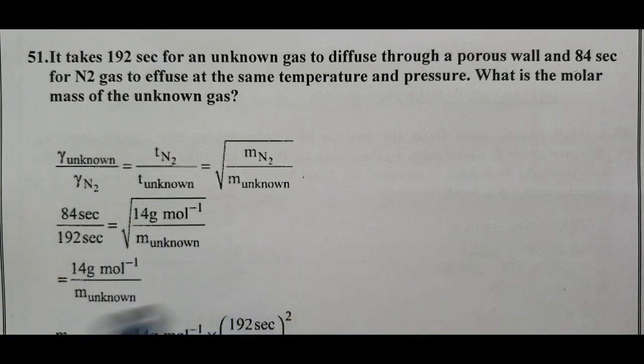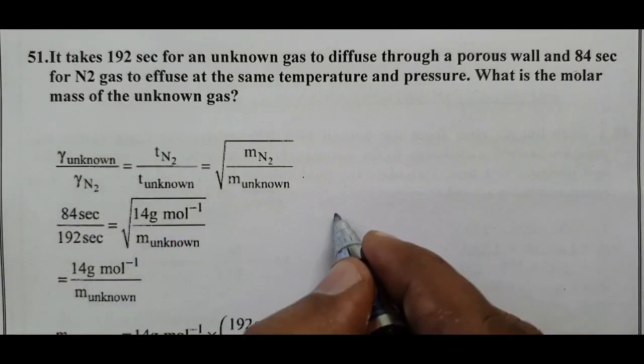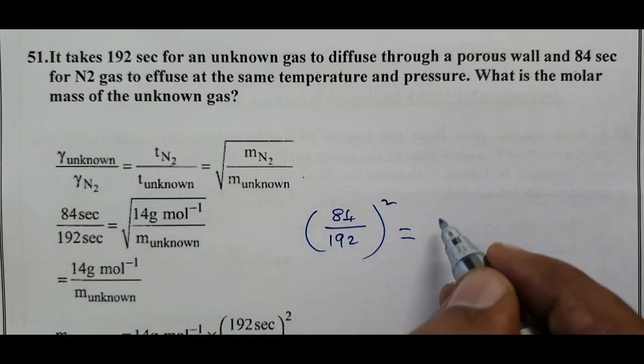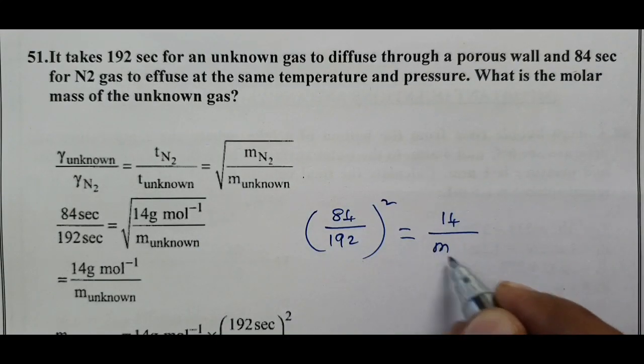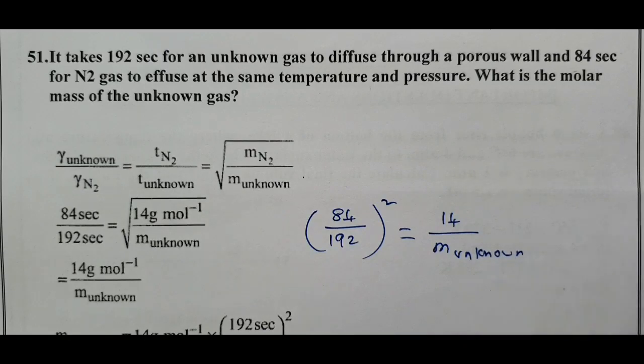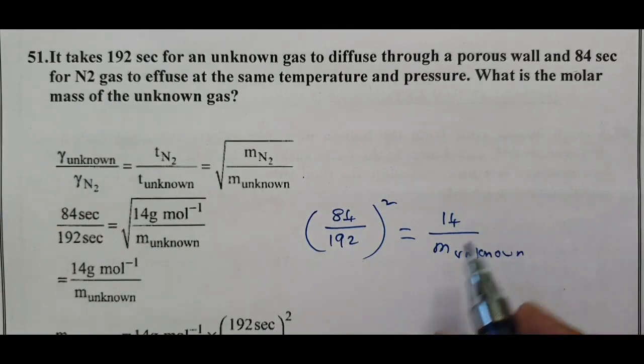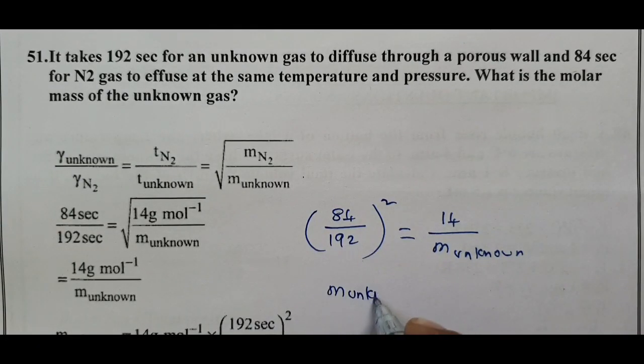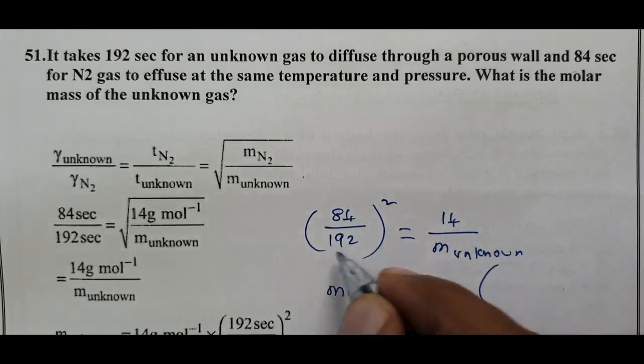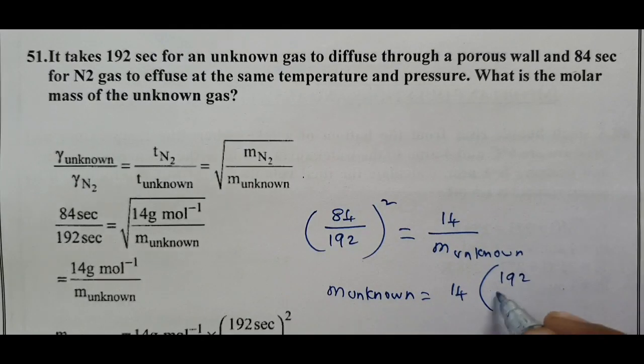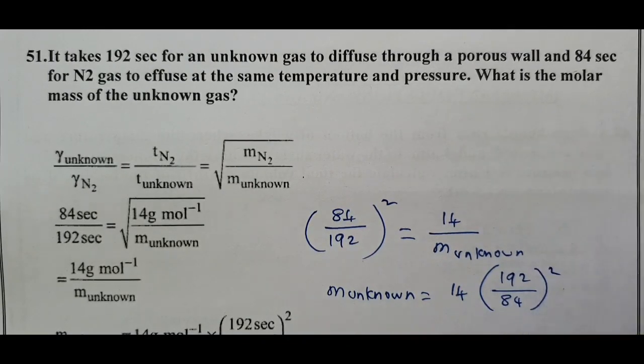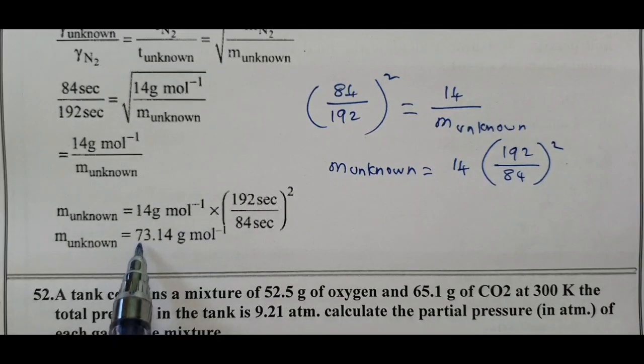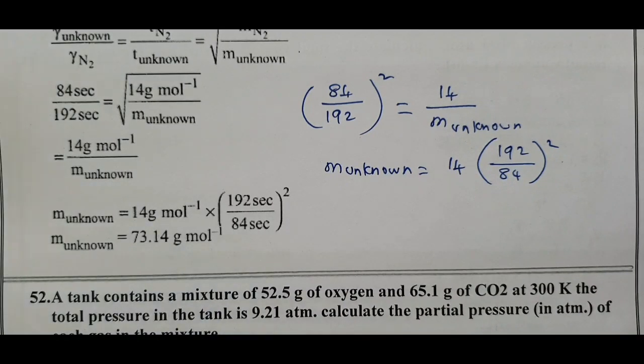84 by 192 square equals 14 divided by mass of unknown gas. Solving, the mass of unknown gas equals 14 multiplied by 192 divided by 84, the whole square. The mass of unknown gas is equal to 73.14 gram mole power minus 1.